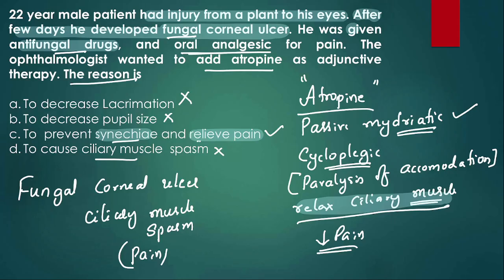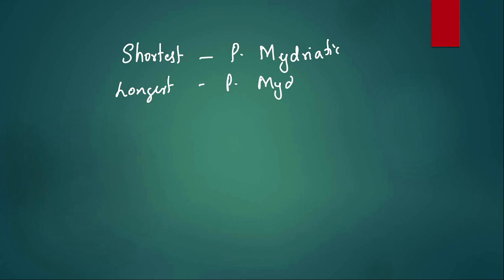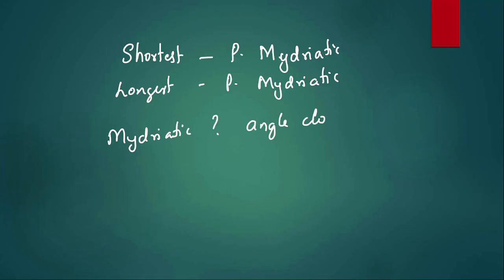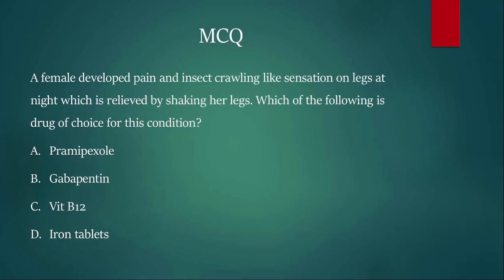So atropine is used in fungal corneal ulcer to prevent adhesions and relieve pain via ciliary muscle relaxation. Questions to consider: Which is the shortest-acting passive mydriatic? Which is the longest-acting? And can mydriatics be used in angle-closure glaucoma? Please answer these in the comments.